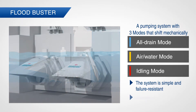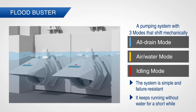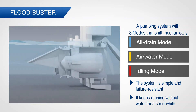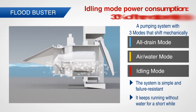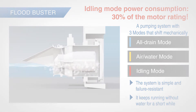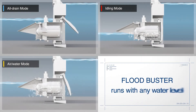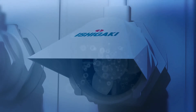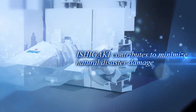As it can run without water for a short time, it is thoroughly prepared for any natural disasters. Power consumption during the idling mode is only about 30% of the motor rating. Flat Buster runs at any water level. Ishigaki supports safe and secure urban development with its excellent Flat Buster.